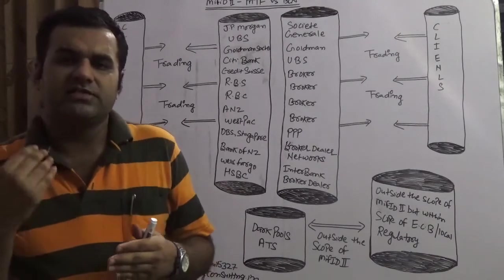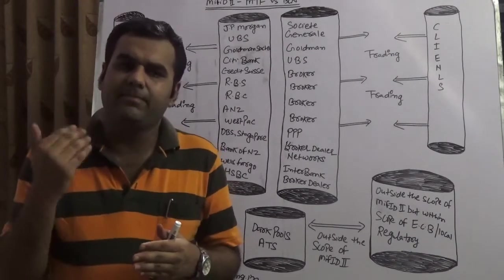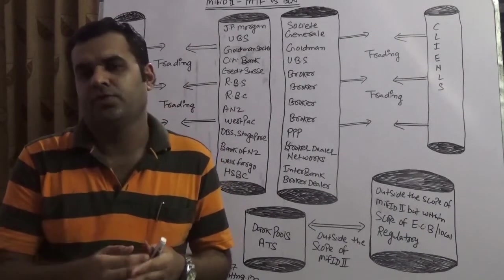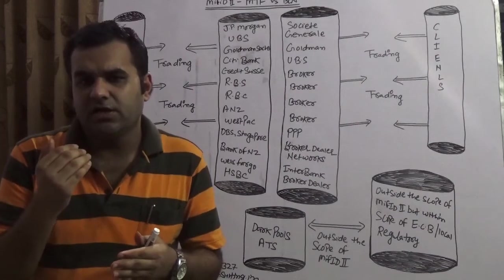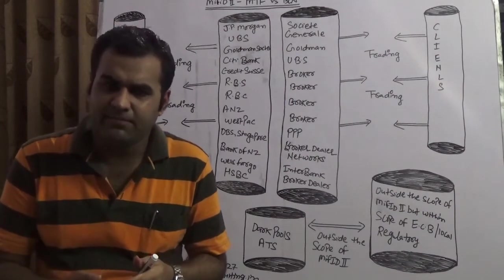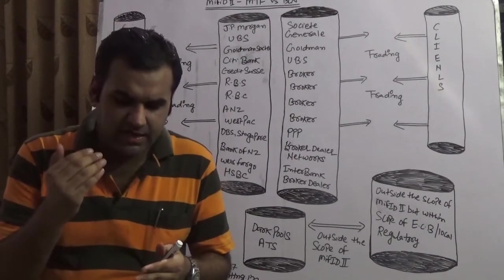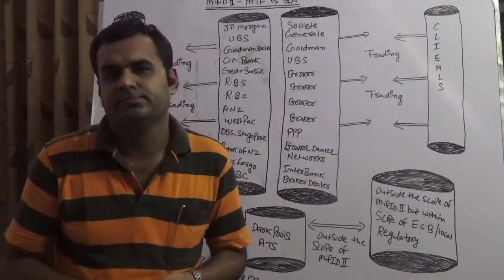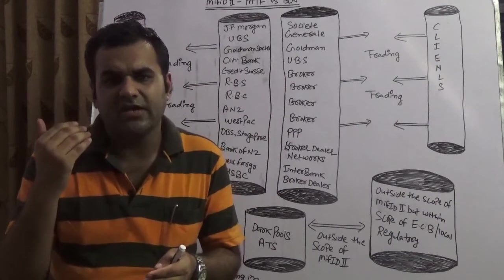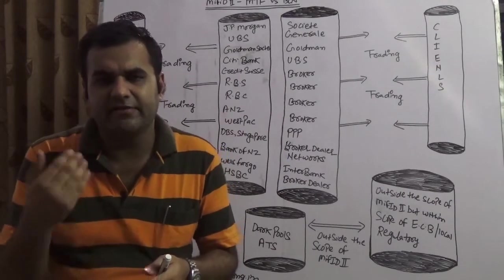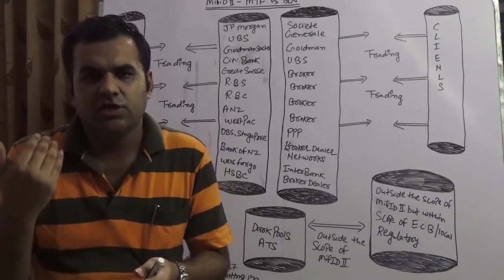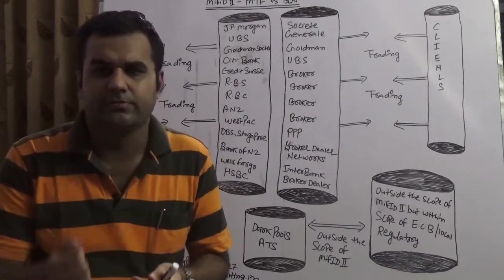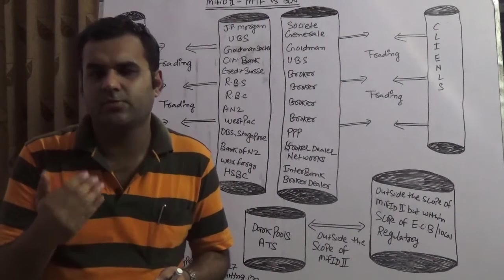In BCN there is discretion. The discretion means that a relevant bank has a right to say no to you. For example, Goldman Sachs has Alpha Y as a BCN and JP Morgan Chase is coming, Goldman Sachs can say no to JP Morgan Chase and JP Morgan Chase cannot go to any regulatory and complain why Society General has said no to me. This is BCN broker crossing network.